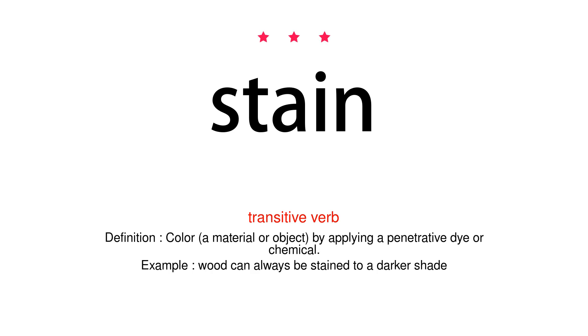Transitive verb. Definition: Color a material or object by applying a penetrative dye or chemical. Example: Wood can always be stained to a darker shade.